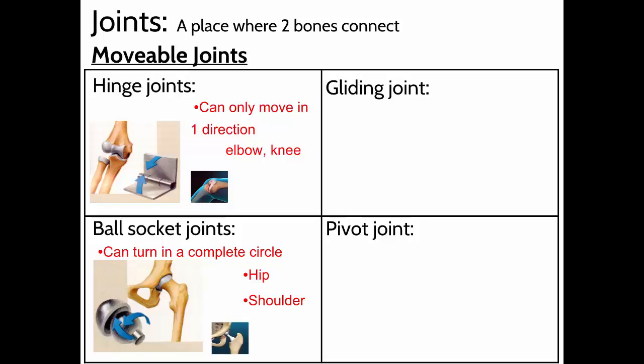Gliding joints are where bones sit one on top of the other and can move over the top of each other. The best example is the vertebrae — those 33 back bones each sit one on top of the other, cushioned by a disc of cartilage. Each one can twist or bend a little, allowing you to twist side to side or shift. That's a gliding joint.